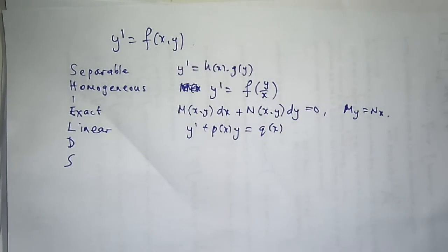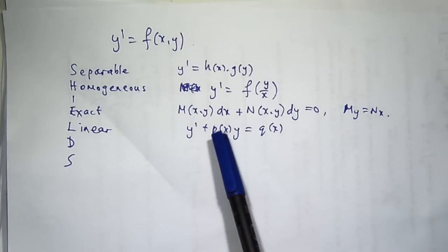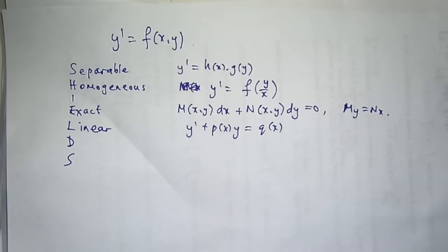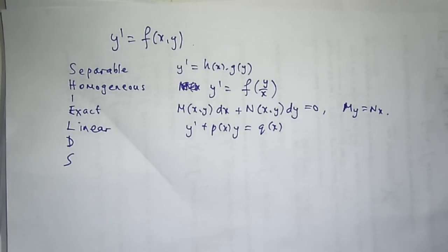To solve a linear equation, what you do is you look at this coefficient function of Y and you form an integrating factor, e to the integral of P of X. And you multiply through both sides and then you use the product rule to reduce the left-hand side to the derivative of a product.